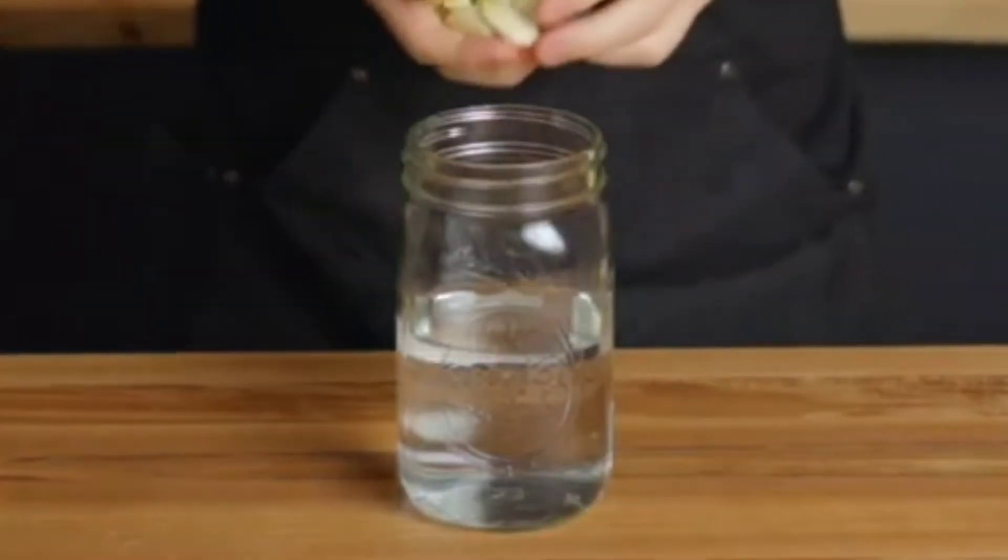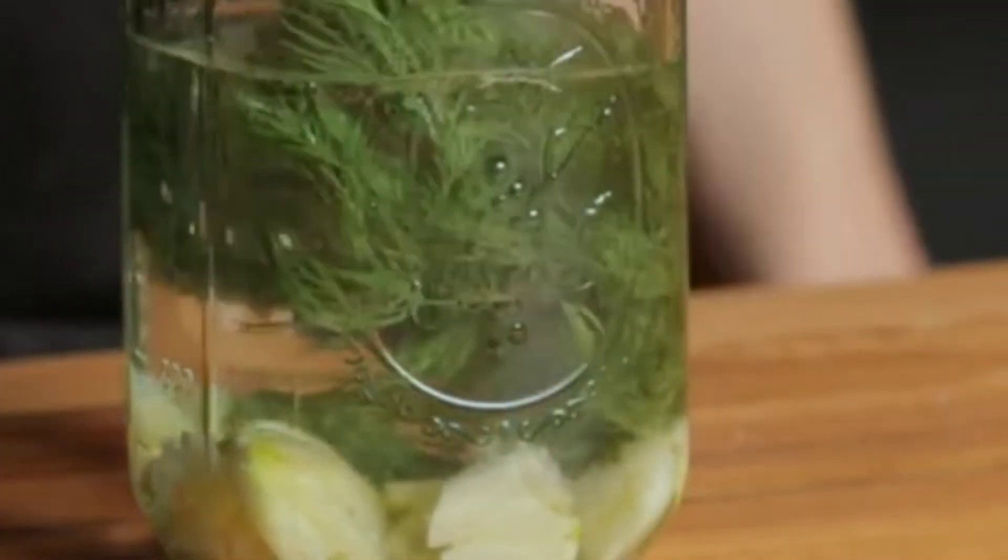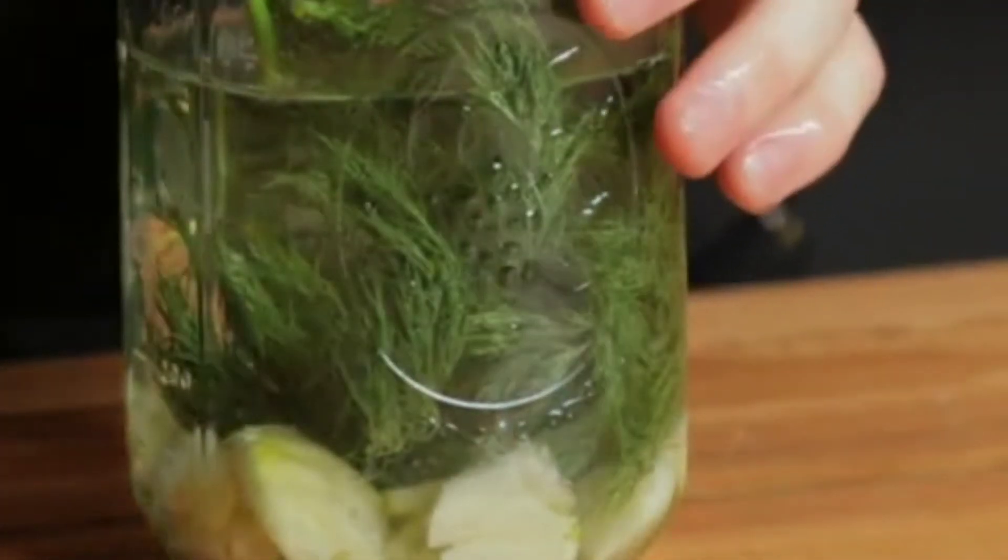Next, find some spices or herbs that you like. I'm going to be adding some garlic because I like garlic, and some dill. Make sure you don't use the whole stem - this is the top of the dill, so it's just flavorsome. You can use other herbs like chervil or parsley or whatever you like.